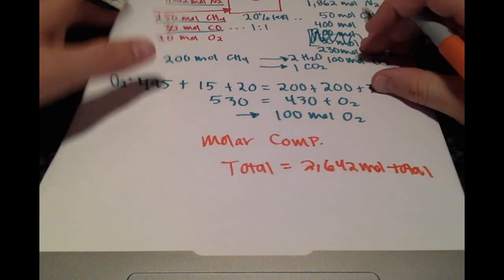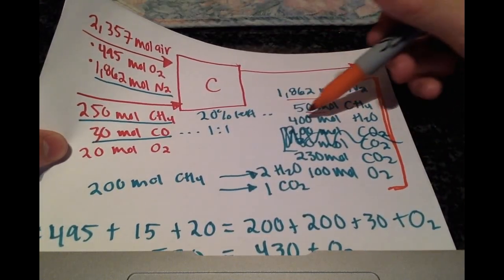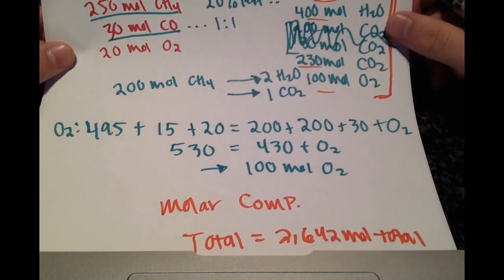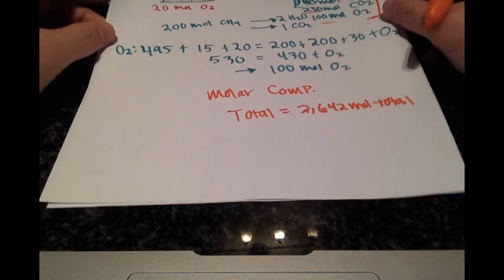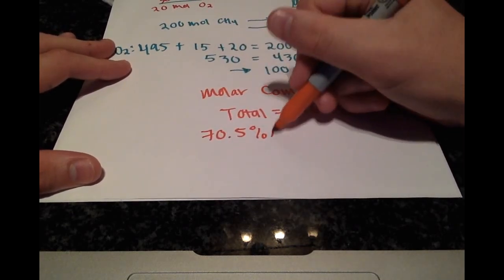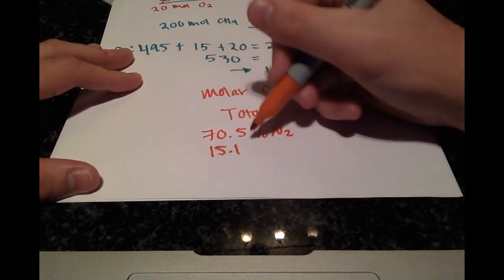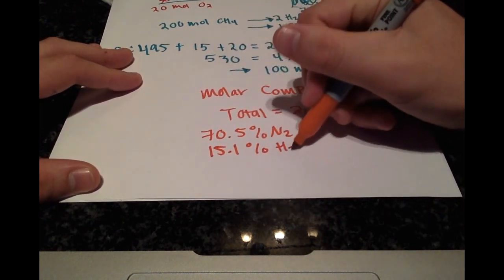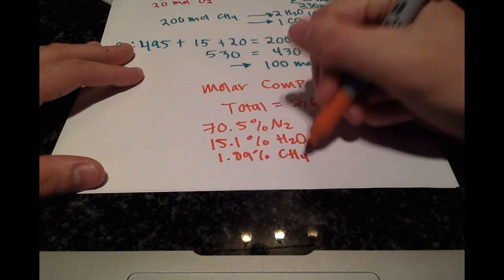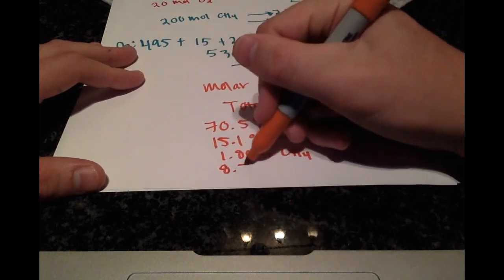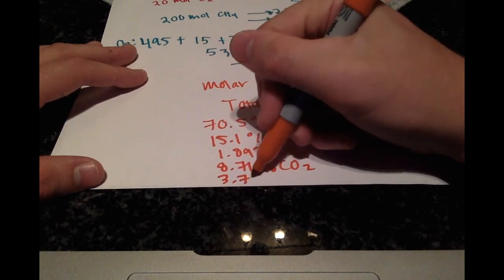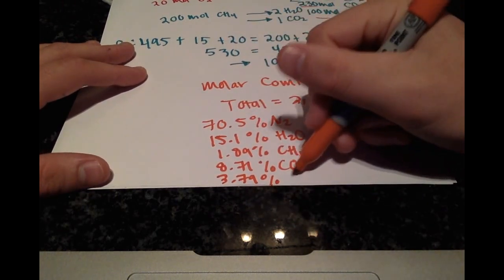We're going to be taking each component, dividing it by 2,642 and multiplying it by 100. That'll give us our molar composition. When we do that, we get 70.5% N2, 15.1% H2O, 1.89% CH4, 8.71% CO2, and 3.79% O2.